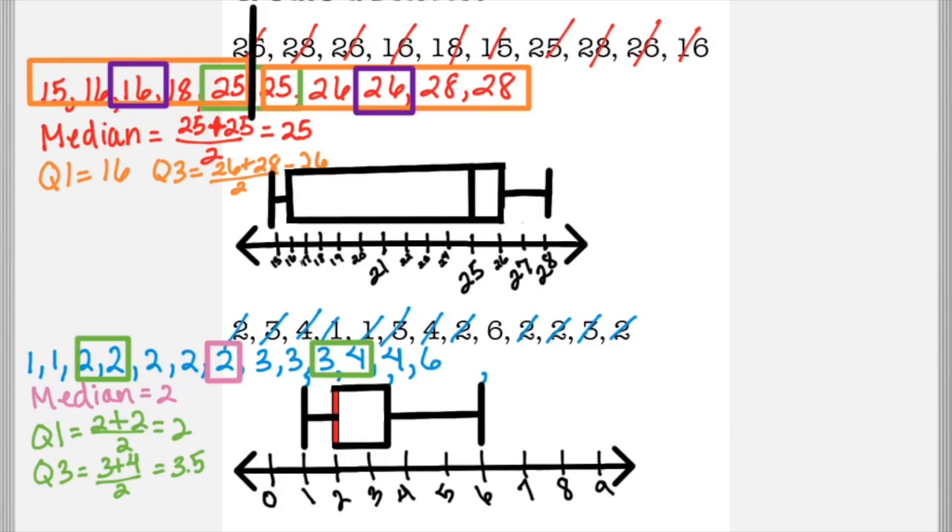Then we close the box and make our whiskers. Our whiskers are the lowest number, which is one, and the highest number, which is six. And that is how you do these two box plots.